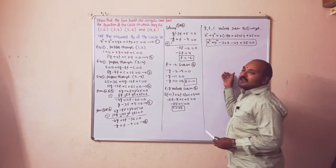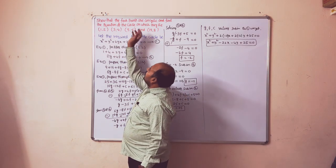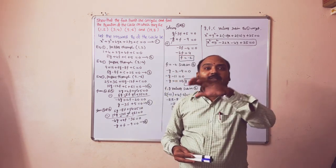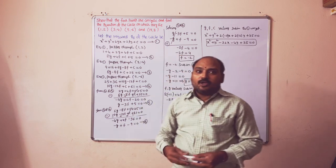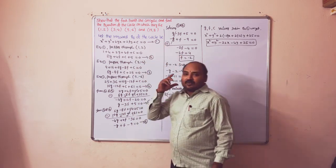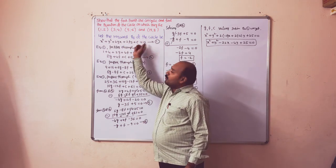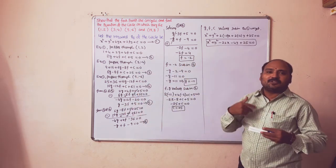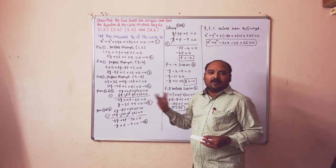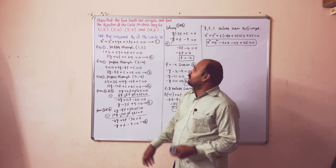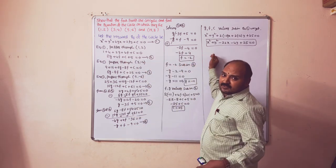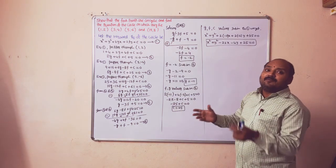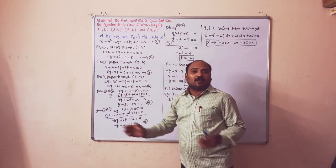But we are still not done, dear students. What they are asking us to prove is: show that the 4 points are concyclic. The meaning of concyclic is that points lying on the same circle are called concyclic. To prove this, we take any 3 of the 4 points, find the equation of the circle through them, then substitute the 4th point. If it satisfies the equation, the given points are concyclic; otherwise, they are not.